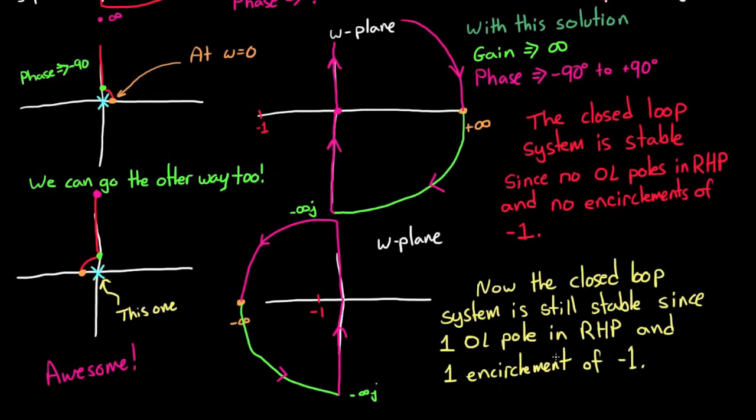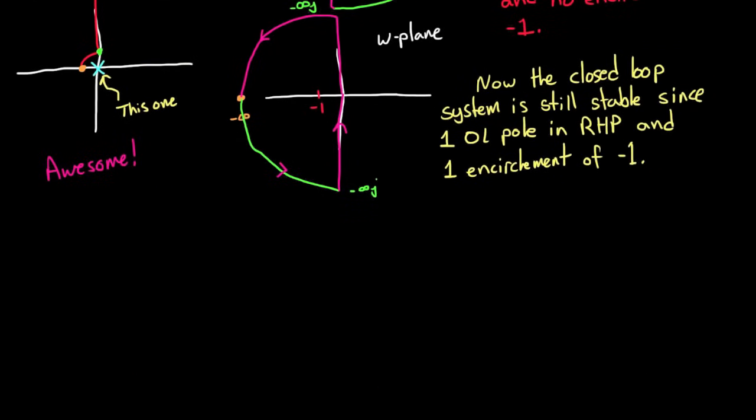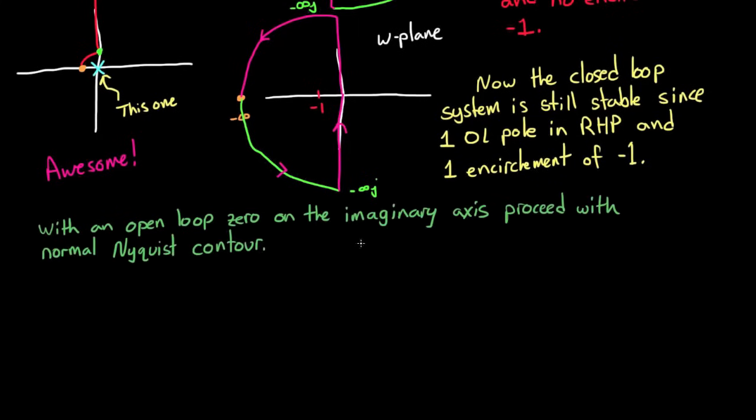So what about an open-loop zero on the imaginary axis? Well, you don't really have to worry about that, because even though the phasor is still undefined in phase, it turns out that we don't really care because the gain is 0. And like I said before, when gain is 0, the point lies at the origin in the w-plane, and so the phase doesn't really change that. You can do the loop around thing like we did before, but you're going to find you're going to get the exact same answer as not doing it. So for open-loop zeros, proceed as normal, and for open-loop poles on the imaginary axis, do this fancy adjusting of the contour.